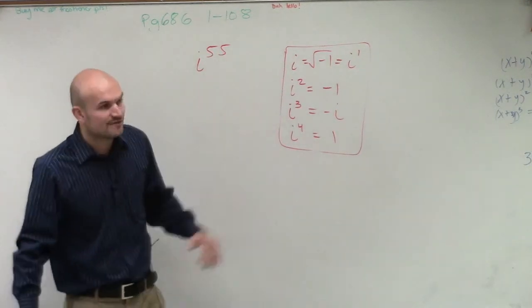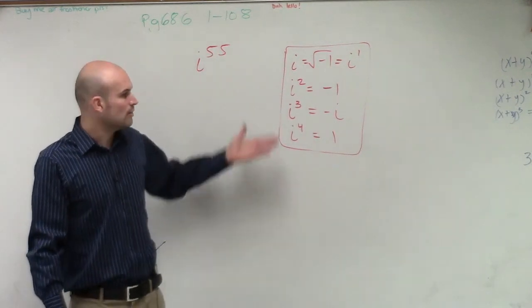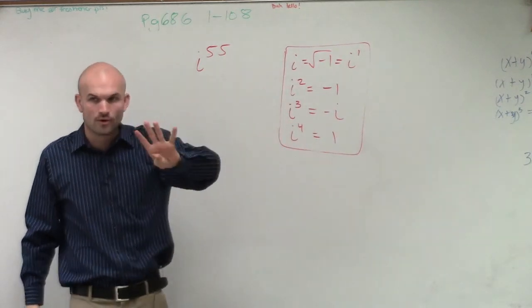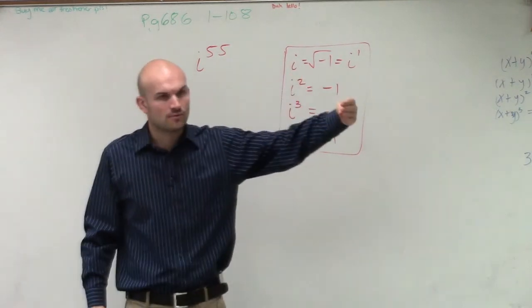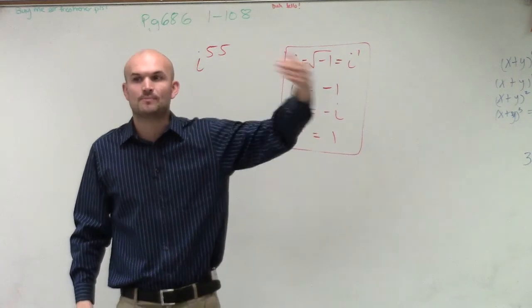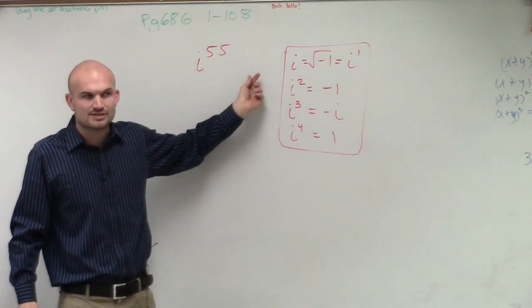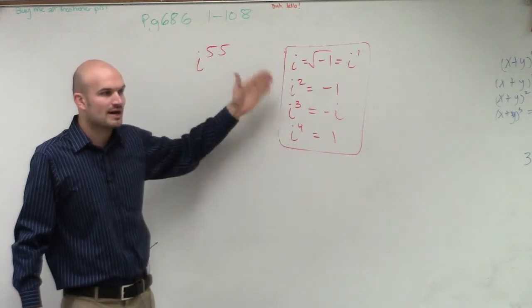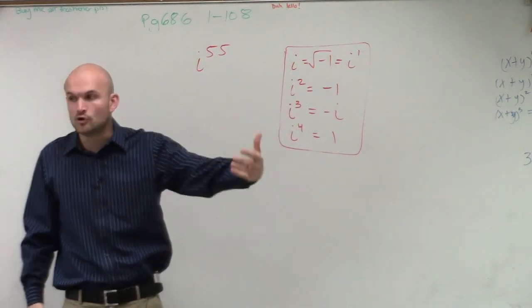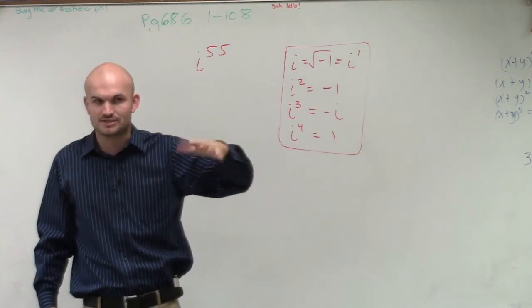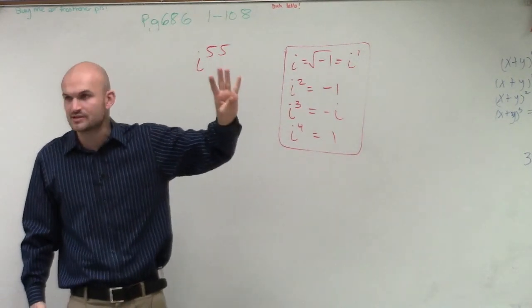So all we know is, if I say i to the 55th, what is that worth? Well, we know there's a repetition of 4. So every single time we get to the fourth one, then the next one, it repeats. So what I want to do is I want to remove all these repetitions. Because every single time it goes up to 4, it repeats. So I want to remove the total amount of repetitions. So it takes 4 times for it to repeat.